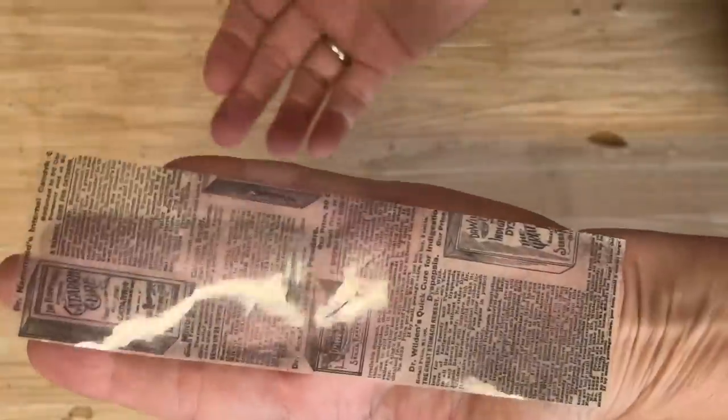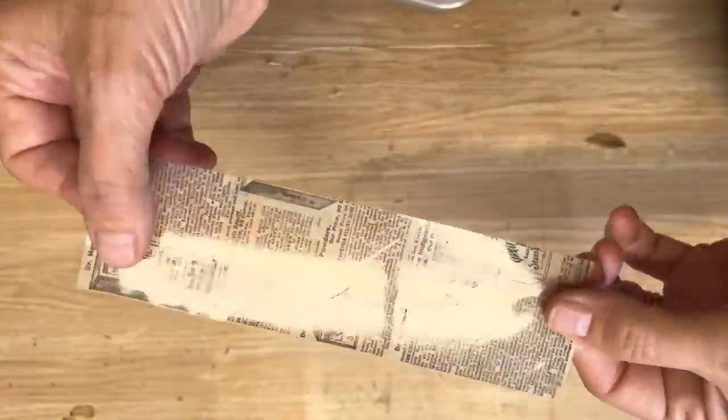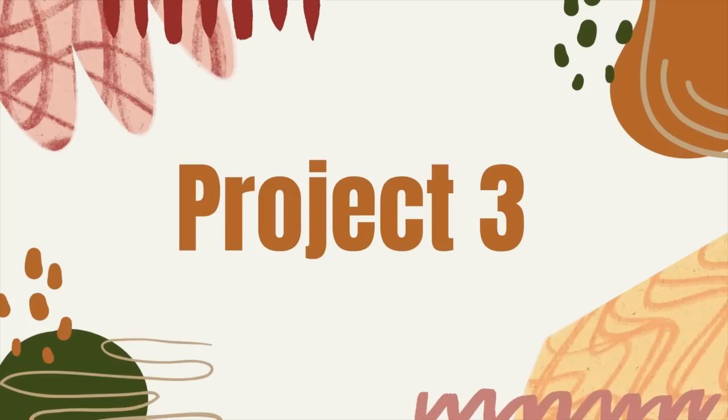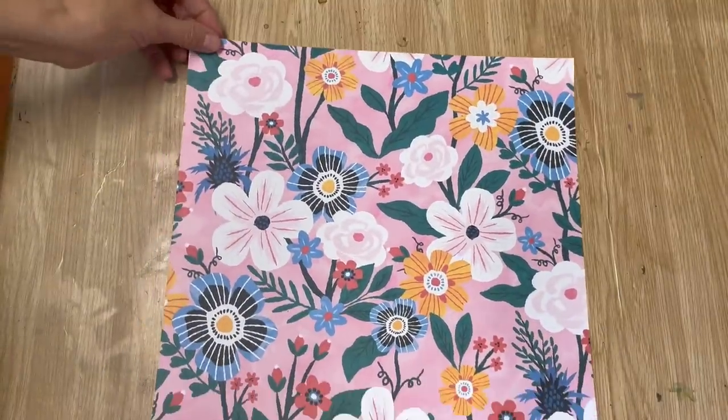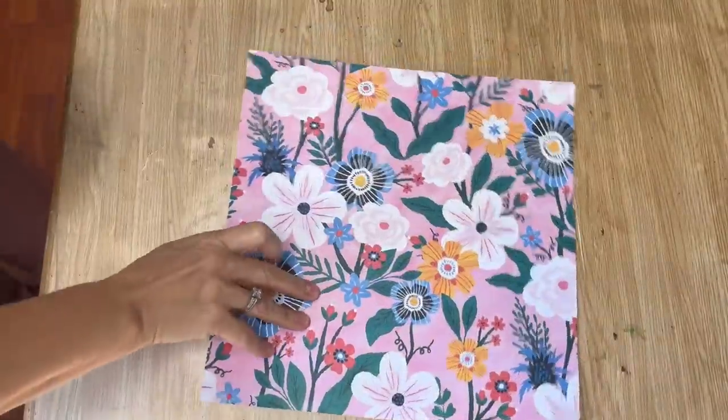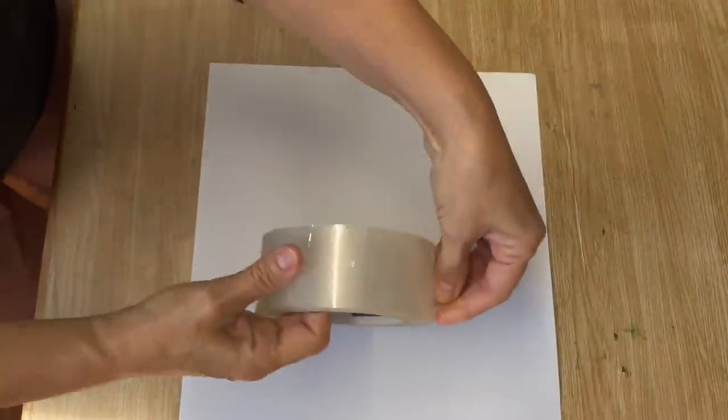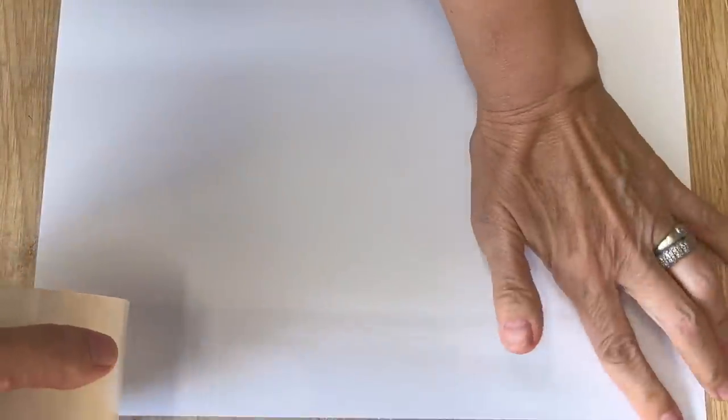Next packing tape DIY is a little bit of a hack. If you have scrapbooking paper that you want to decoupage with but it's too thick, this is a great way to make it usable for your decoupaging projects. Take a piece of thick scrapbooking paper or cardstock and put packing tape all along the back.